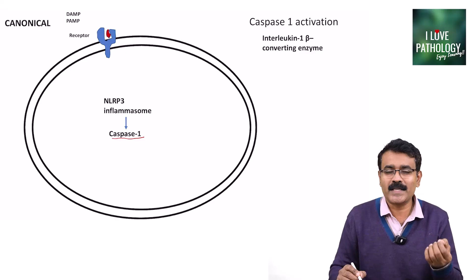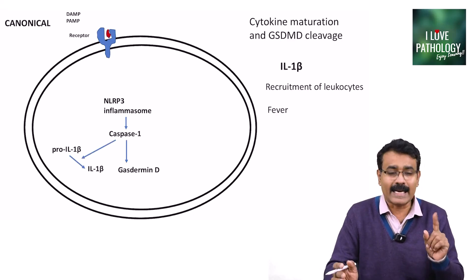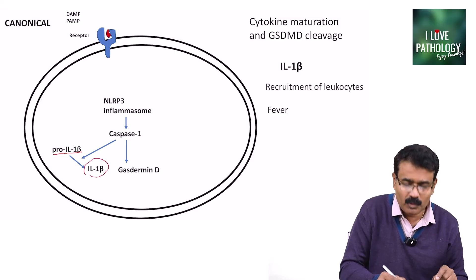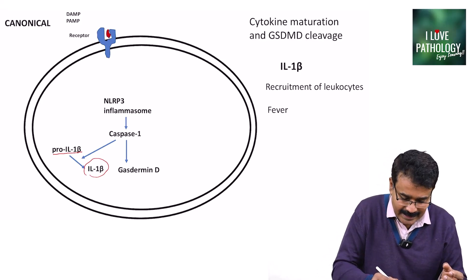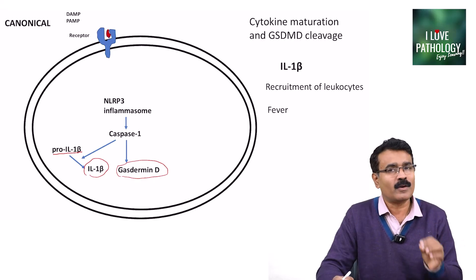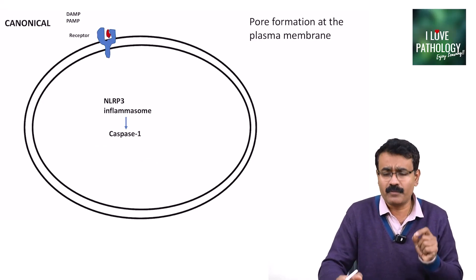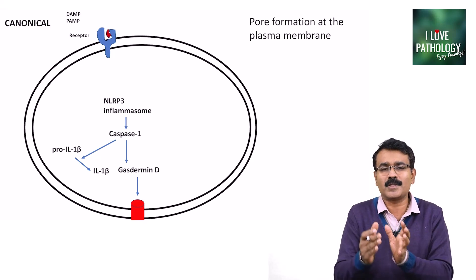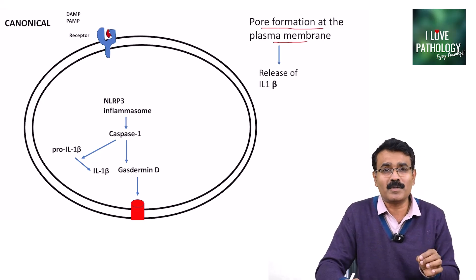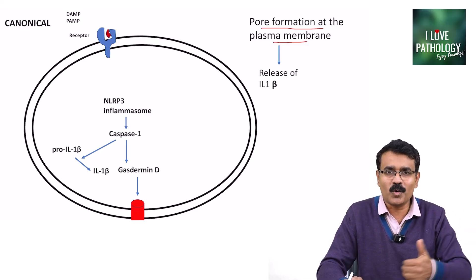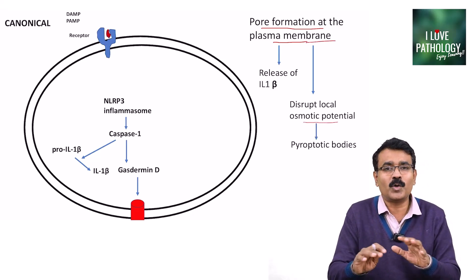Caspase-1 is also referred to as interleukin-1-beta converting enzyme because it converts pro-interleukin-1-beta into activated interleukin-1-beta. Another important function of caspase-1 in pyroptosis is that it cleaves gasdermin D. Interleukin-1-beta is responsible for recruitment of leukocytes and for fever. Once gasdermin D is cleaved, it attaches to the plasma membrane, resulting in pore formation.